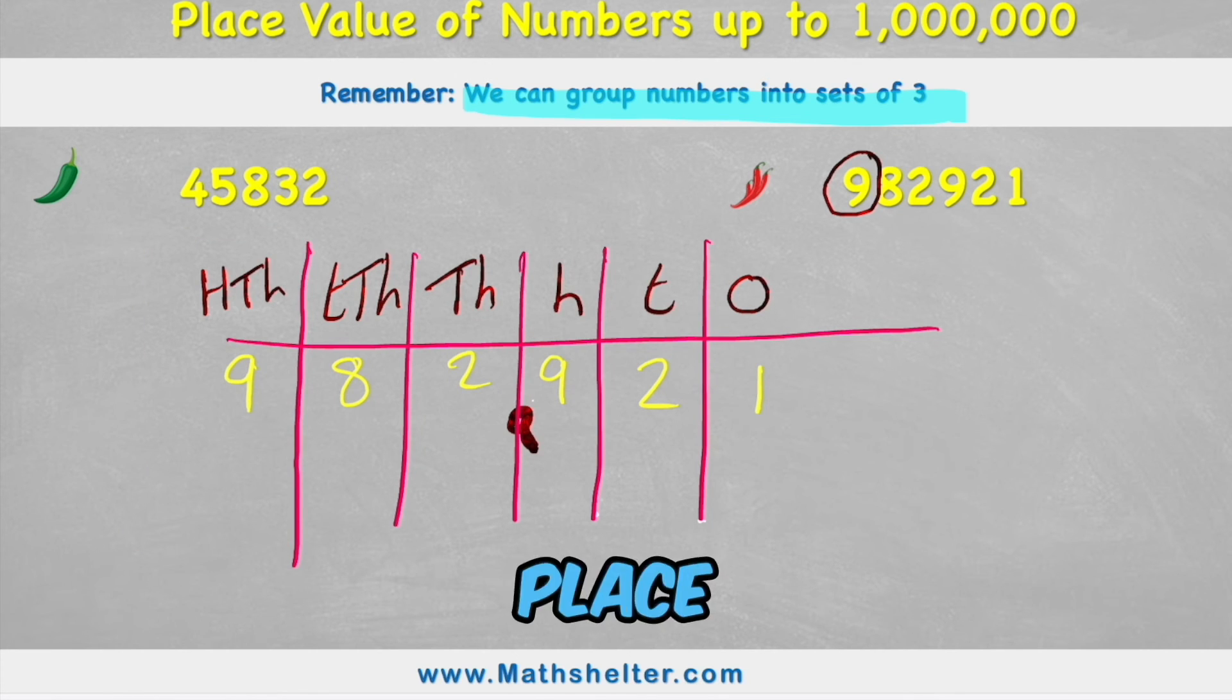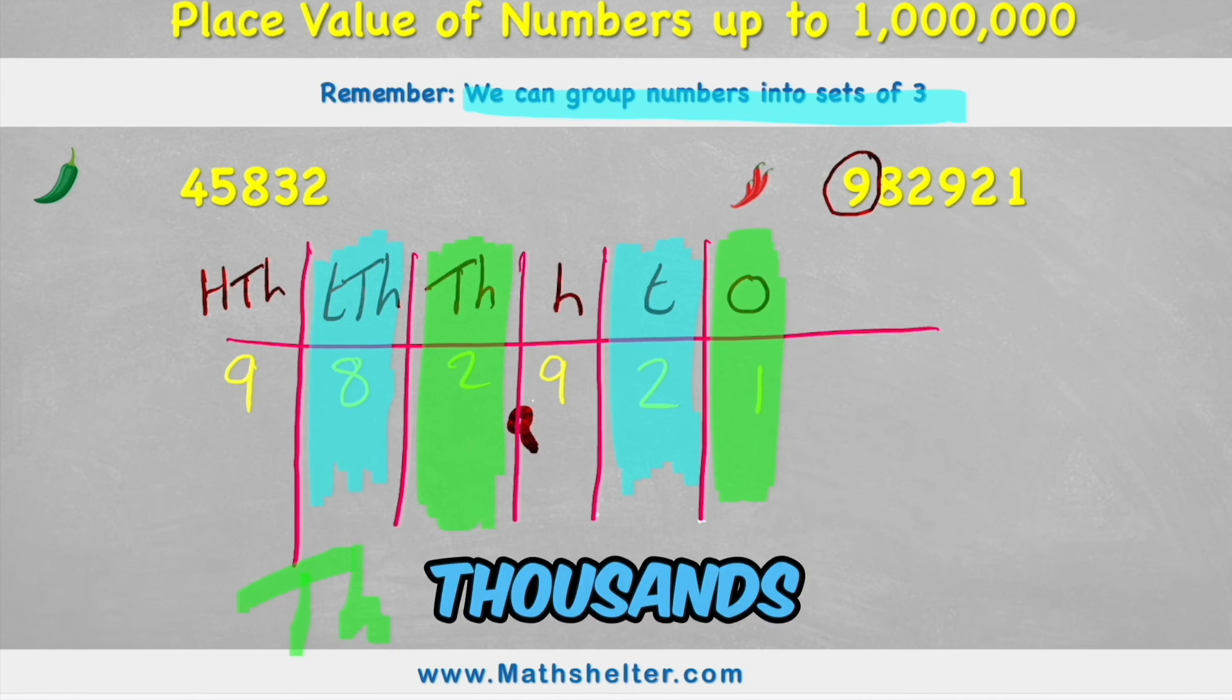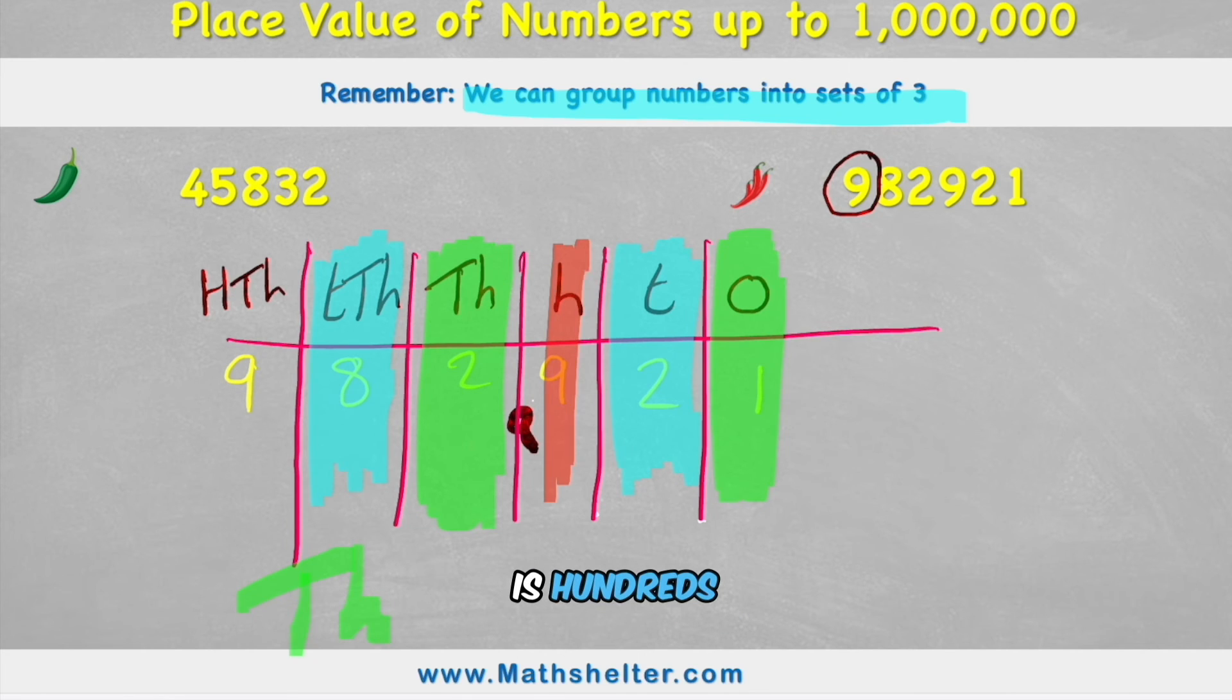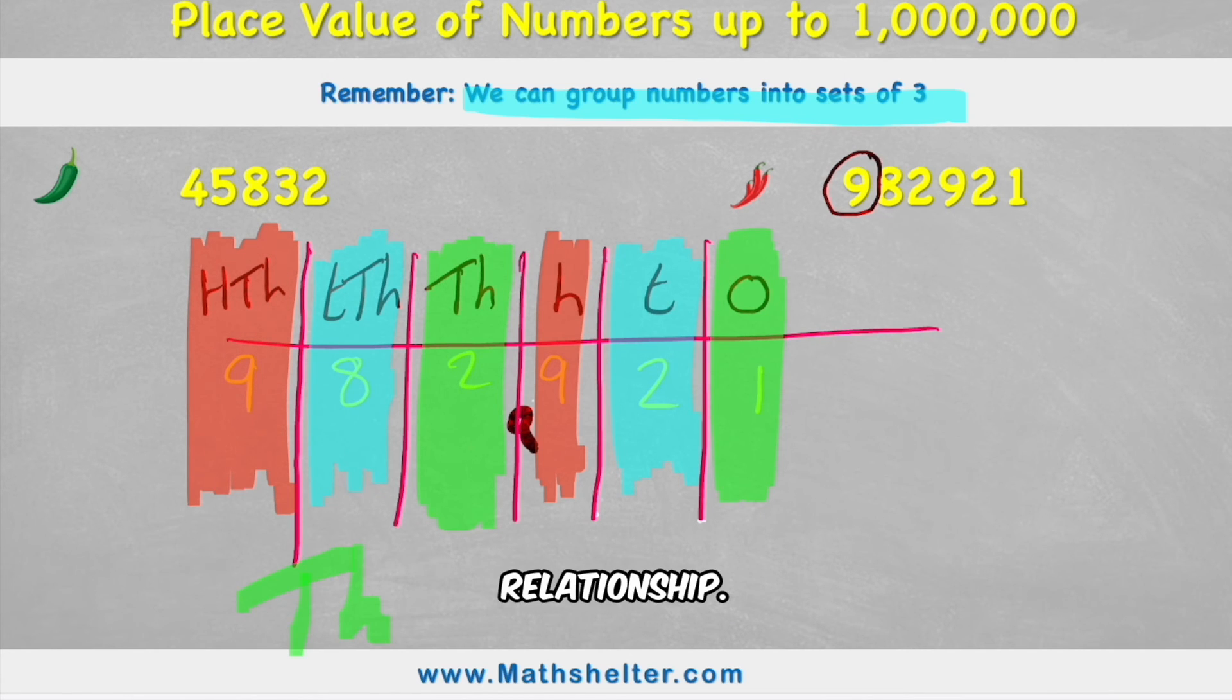And if we analyze our place value chart here, we can understand why. The first column is the ones, and the first column of the second block is the thousands. And then the second column is tens, and the second column of the second block is 10,000s. Because remember, this is the thousands block. Third column is hundreds, and therefore, the third column of this thousands block would be 100,000s. So hopefully we can see that relationship.